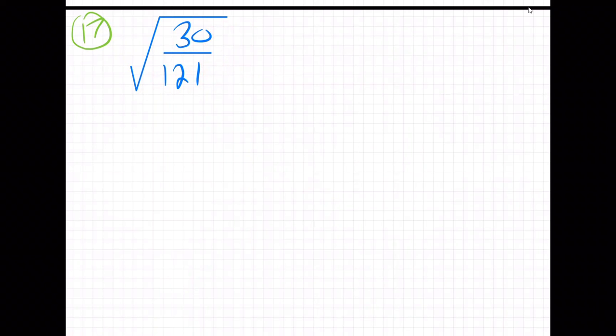So what do we do? We just break it down. I take the 30—let me just do the 30. It's 3 times 10, and that's 2 times 5. So the top, I'm just going to do the square root like this.